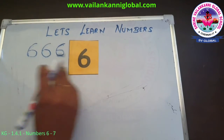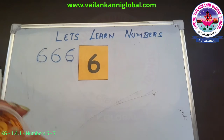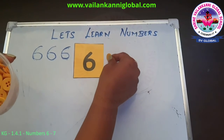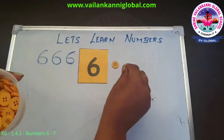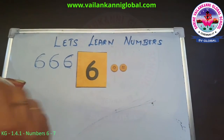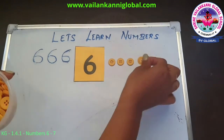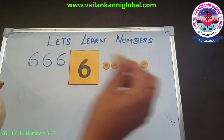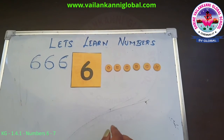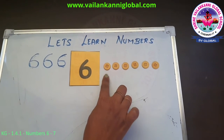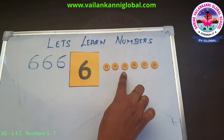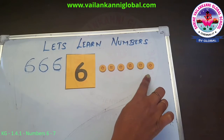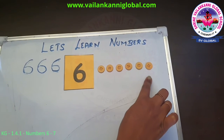Now let's count with buttons. One, two, three, four, five and six. Now count along with me. One, two, three, four, five and six. So there are six buttons.